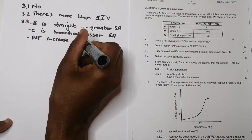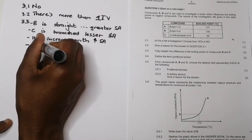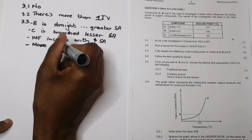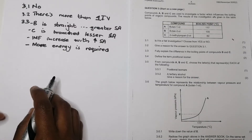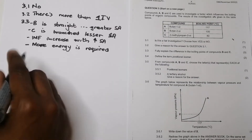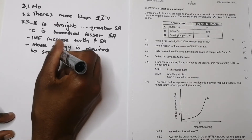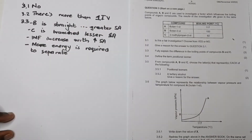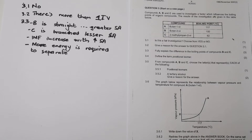Because intermolecular forces increase with an increase in surface area, more energy is required to separate the molecules of compound B than those of compound C. As a result, compound B has a greater boiling point than compound C, which makes sense given their structural differences.